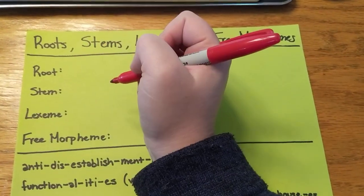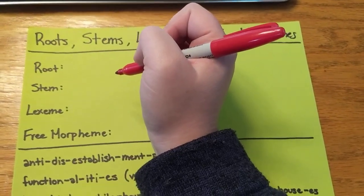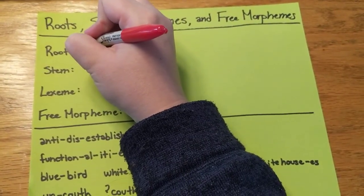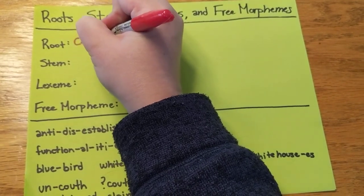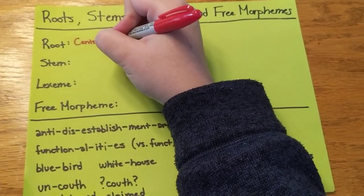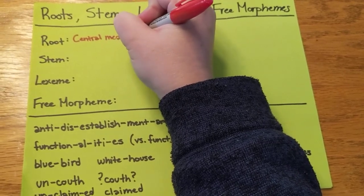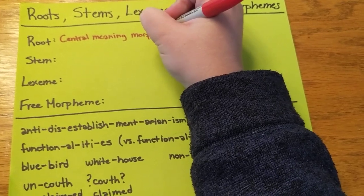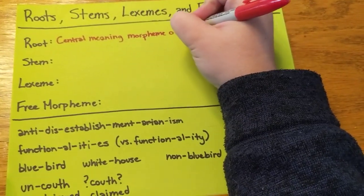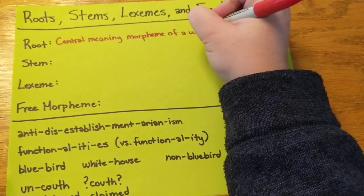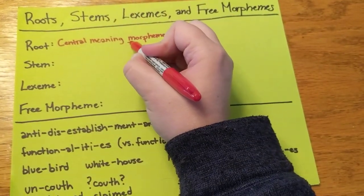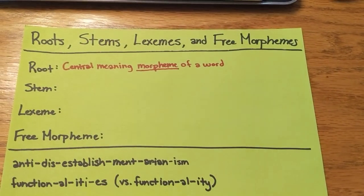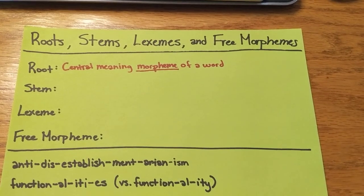A root is very important in morphology cross-linguistically. Roots are extremely important to understand. They are the central meaning morpheme of a word. It's a single morpheme that has meaning all by itself, and that's what gives the word its central meaning — the root.